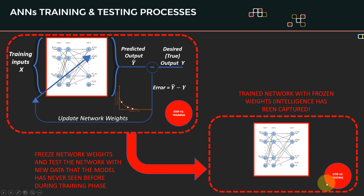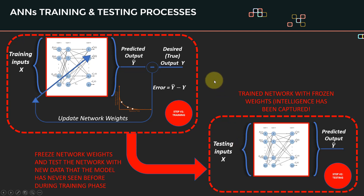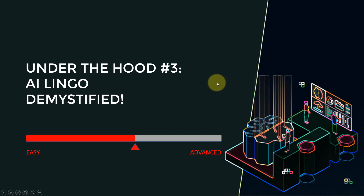In the testing phase, we assess the network's performance on data it has never seen before during training — approximately 20 percent of the data. The output is our predicted y-hat, which hopefully matches the desired output, meaning the network was able to generalize and not memorize. That summarizes the training and testing process for artificial neural networks. In the next lecture we'll cover important AI terminology, including learning rate, epochs, and so on.